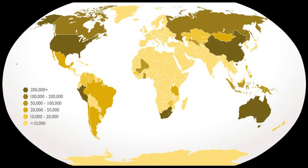Post-independence, the foreign exchange drain was accentuated in 1962 during the border dispute with China. Morarji Desai, then Finance Minister, came out with the Gold Control Act, 1962, which recalled all gold loans given by banks and banned forward trading in gold.